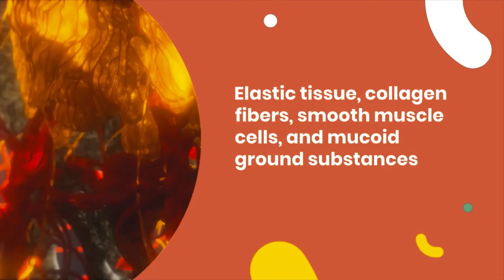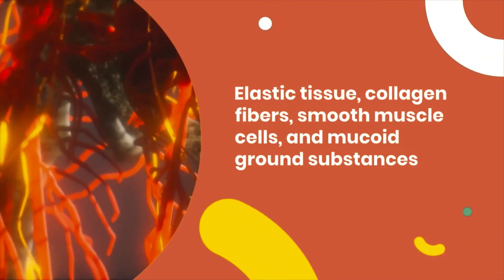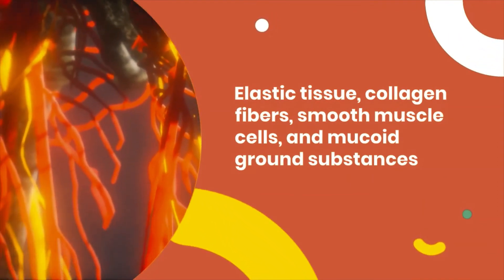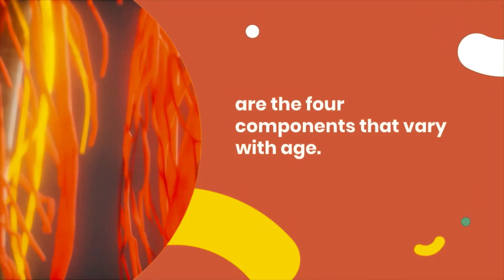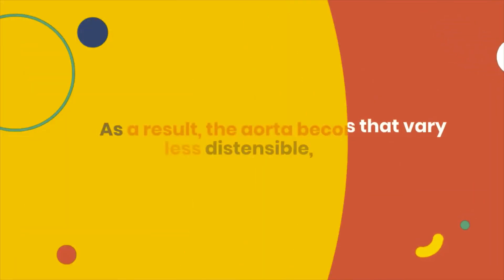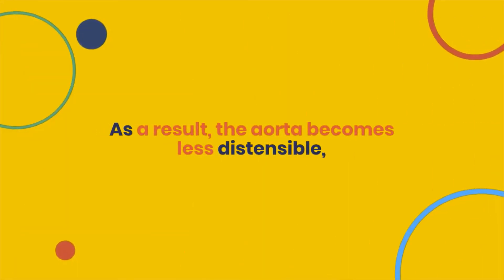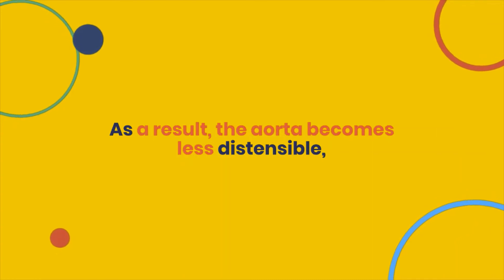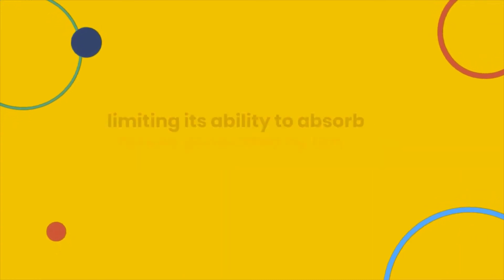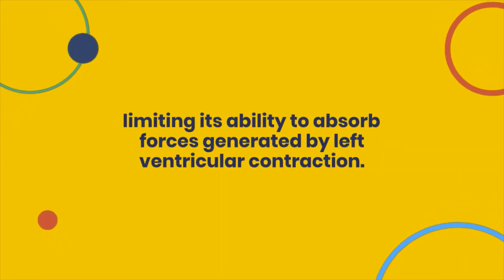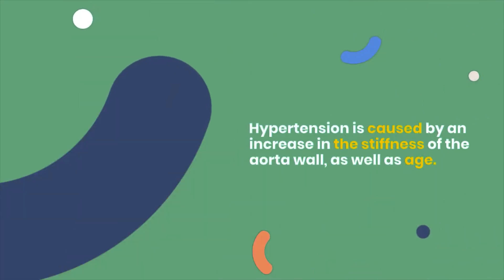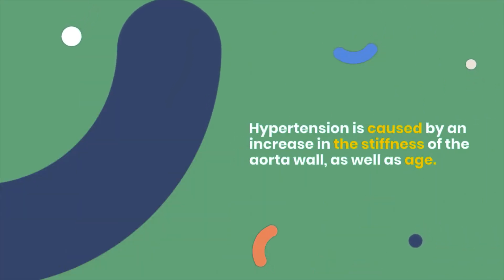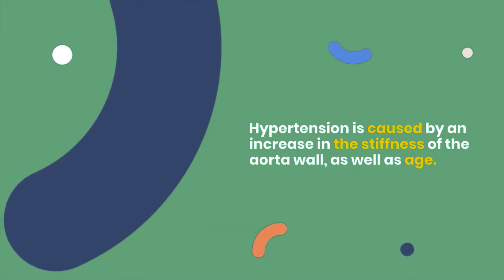Elastic tissue, collagen fibers, smooth muscle cells, and mucoid ground substances are the four components that vary with age. As a result, the aorta becomes less distensible, limiting its ability to absorb forces generated by left ventricular contraction. Hypertension is caused by an increase in the stiffness of the aorta wall.